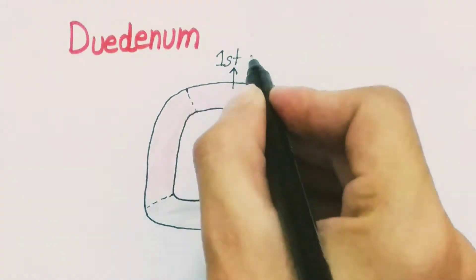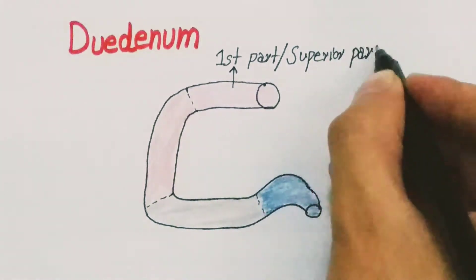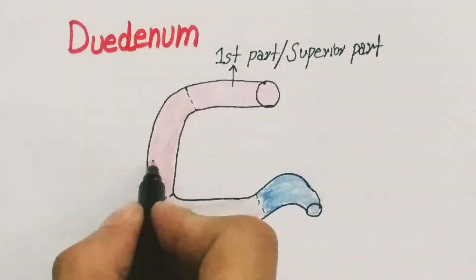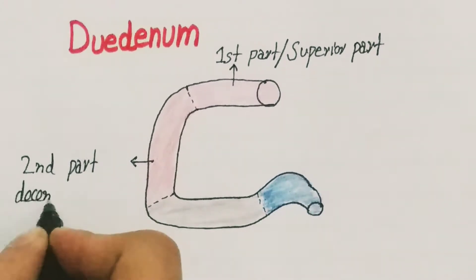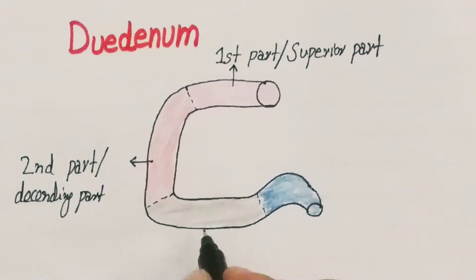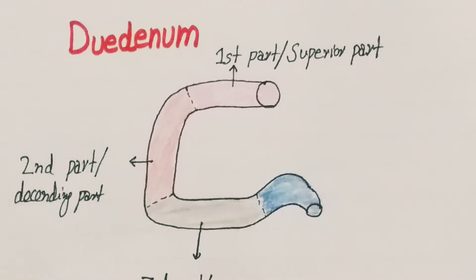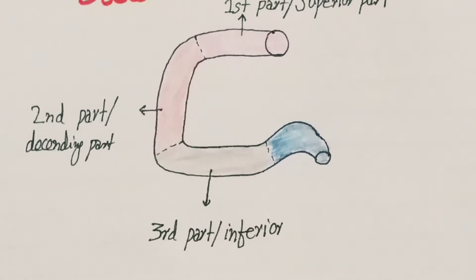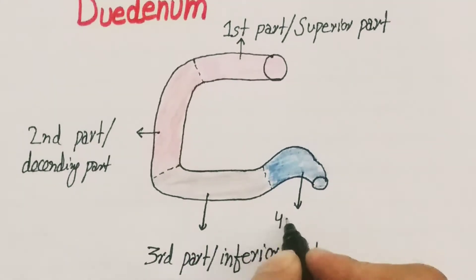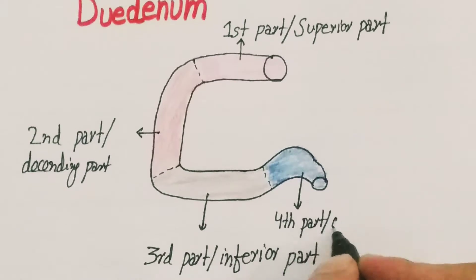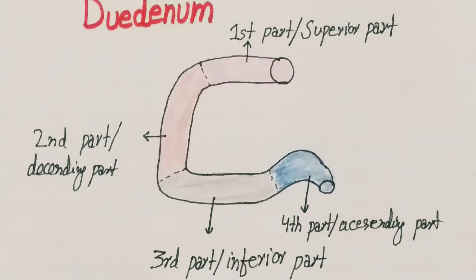The first part is also called the superior part of the duodenum. The second part is also called the descending part of the duodenum. The third part is also called the inferior part of the duodenum. The fourth part is also called the ascending part of the duodenum.